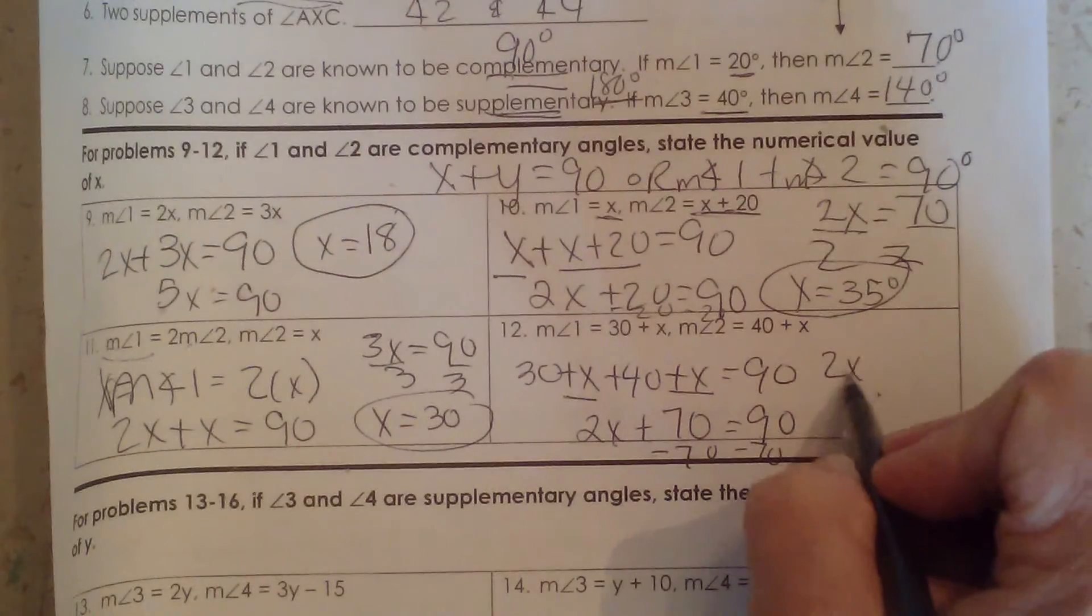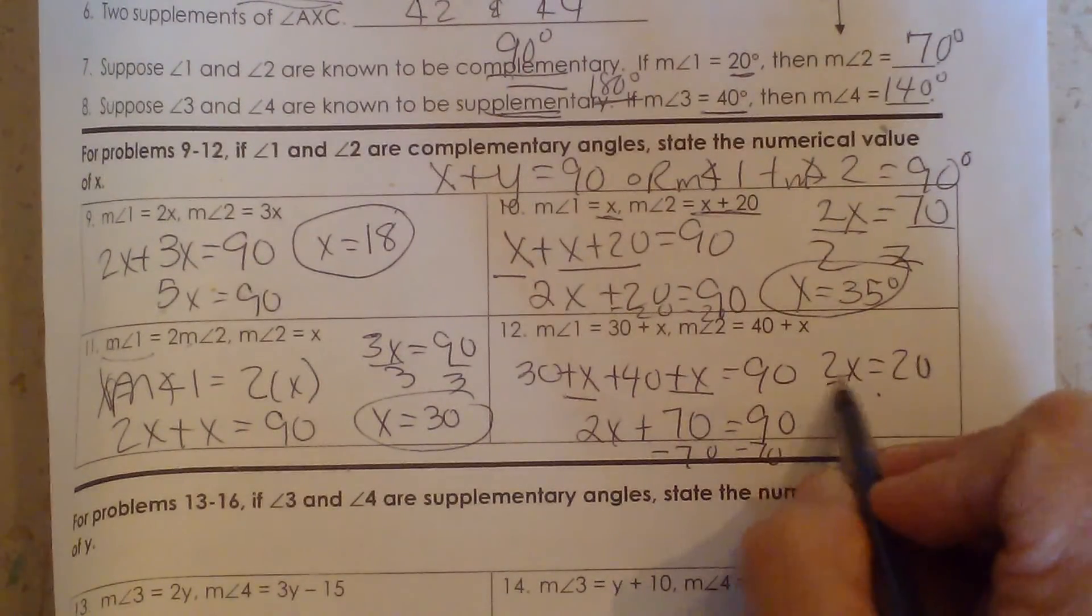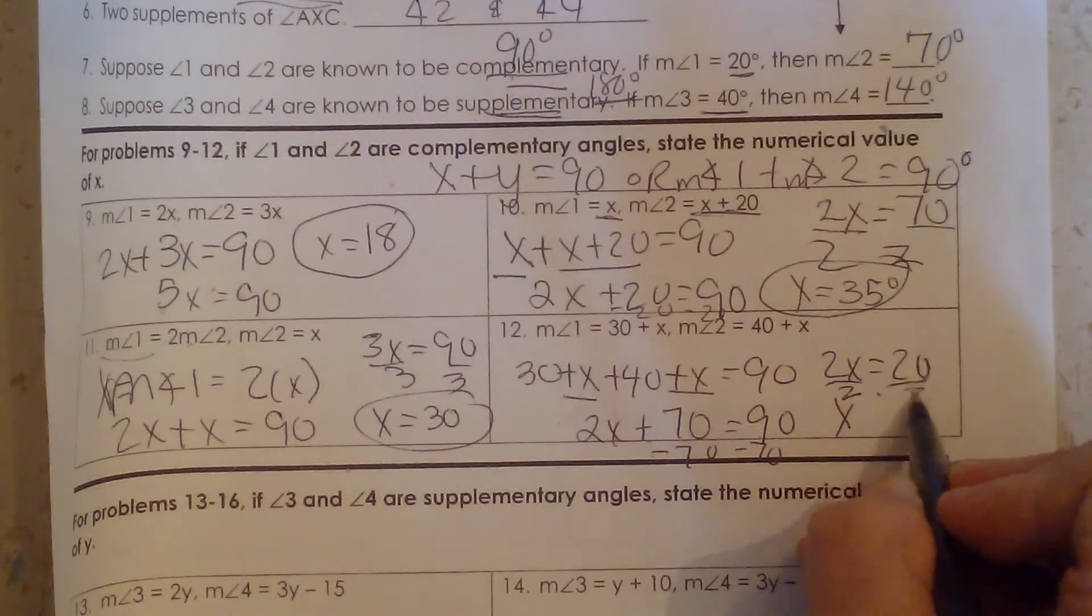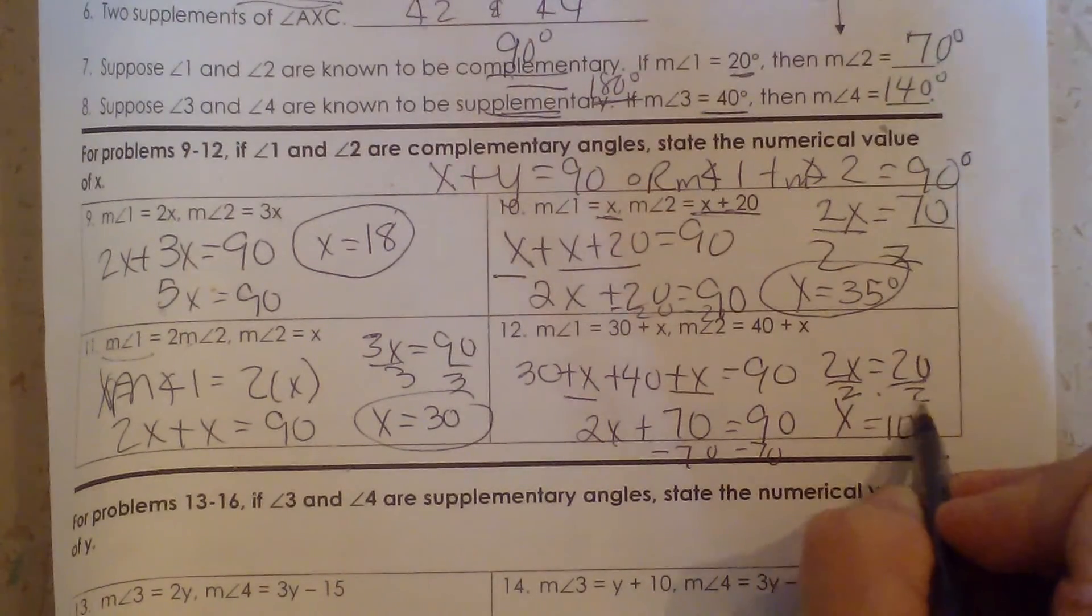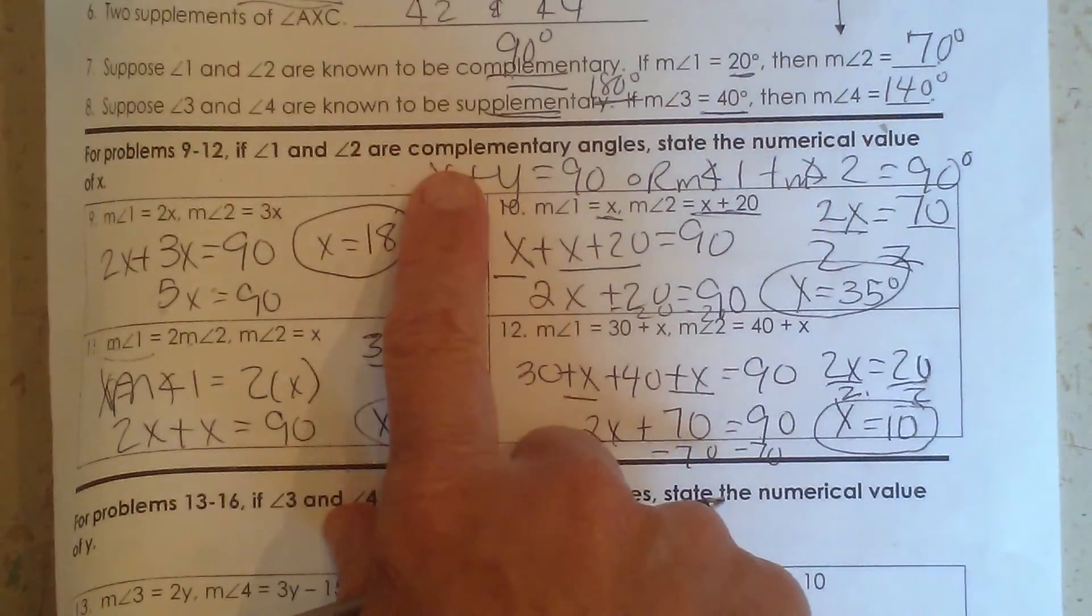So 2x is equal to 20. And x dividing both sides by 2 is equal to 10. So that's the value of x when we're solving for complementary angles.